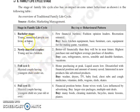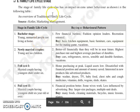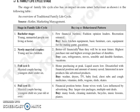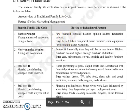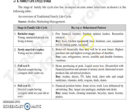In the Bachelor Stage, the person is young or unmarried, living on their own. So their buying decisions are affected. They purchase products with few financial burdens on their own. They are fashion opinion leaders, recreation-oriented, and spend on basic kitchen equipment, basic furniture, car equipment, vacations, etc.